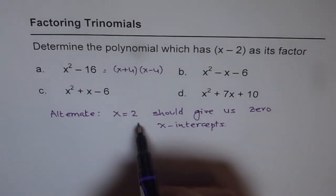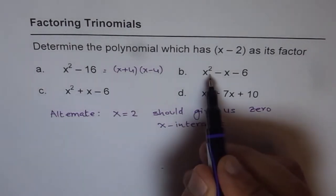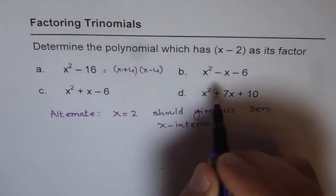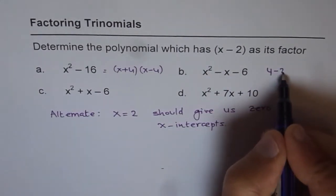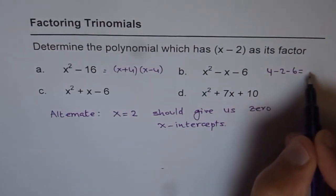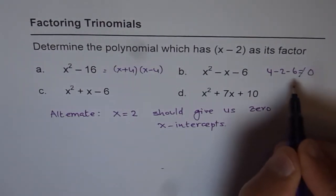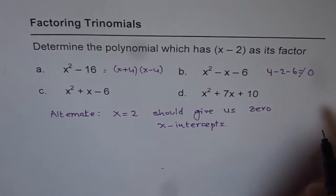You can use your calculator. Let's put 2 now. So if I put 2 here, 2 squared is 4, right? So 4 and then minus 2 and minus 6. Well, this is not equal to 0. So x minus 2 is not a factor.